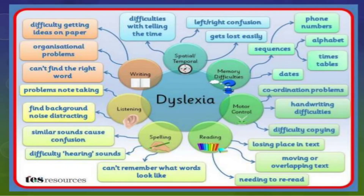Dyslexia is where a child finds difficulty in reading. Reading is not an easy thing — you have to first understand what you are learning, remember the concepts, and handle pronunciation and spelling difficulties. A student with dyslexia may have difficulty copying things correctly, handwriting difficulties, coordination difficulty, memory loss, difficulty recalling things, and difficulty getting ideas onto paper.